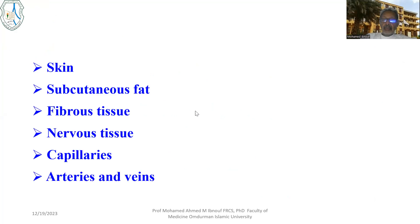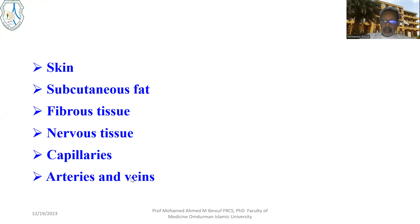I'm going to speak about lumps arising from the skin itself and lumps arising from subcutaneous fat and fibrous tissue, tumors arising from nervous tissue, capillaries, arteries and veins below the skin.